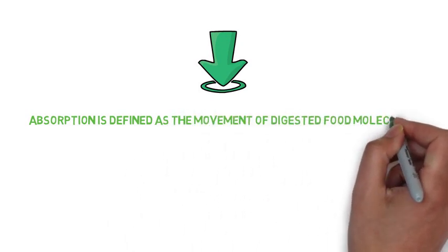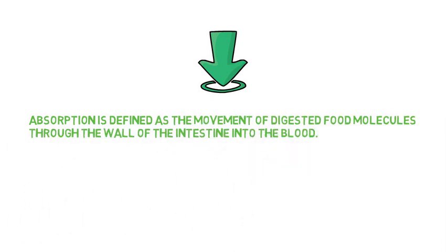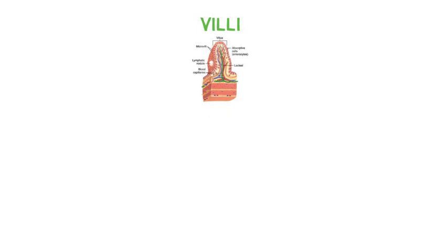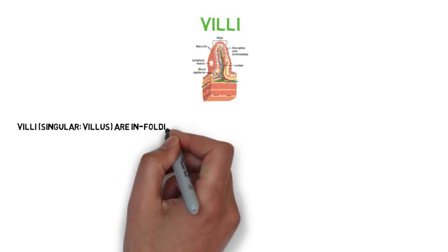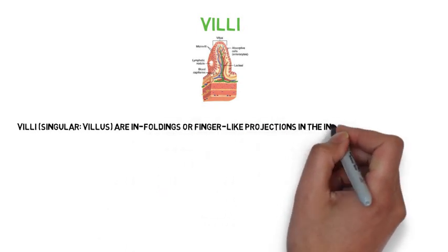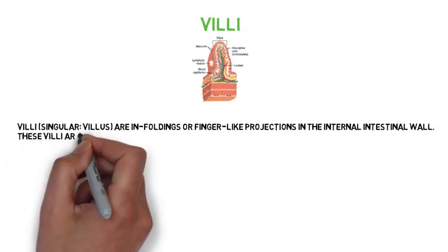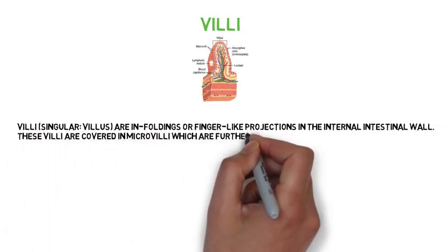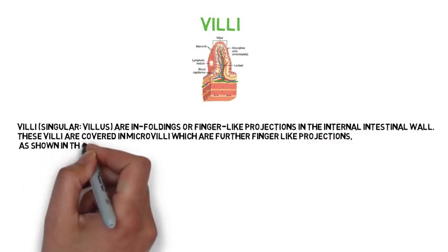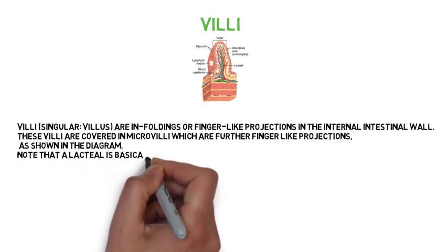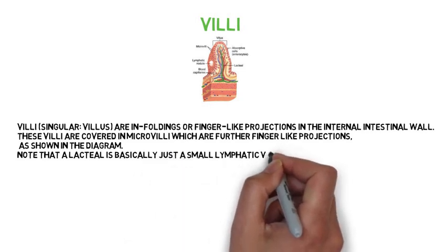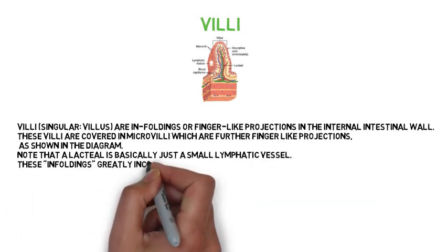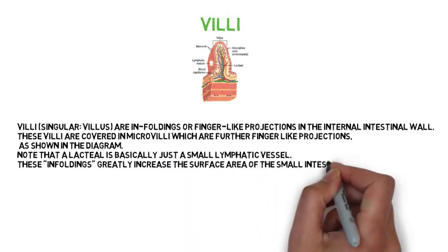Absorption is defined as the movement of digested food molecules through the wall of the intestine into the blood. Villi (singular: villus) are infoldings or finger-like projections in the internal intestinal wall. These villi are covered in microvilli, which are further finger-like projections. These infoldings greatly increase the surface area of the small intestine, so nutrient molecules can diffuse into the blood or lymph faster.